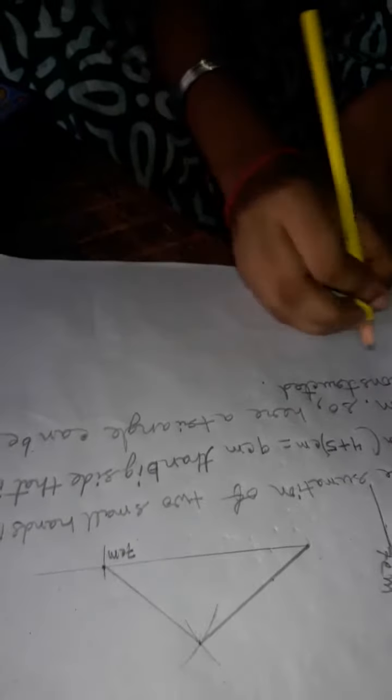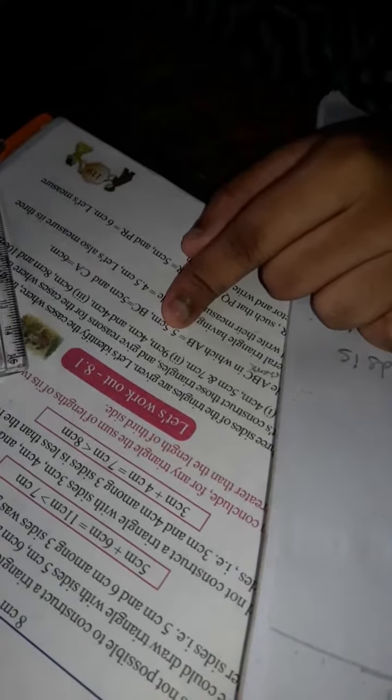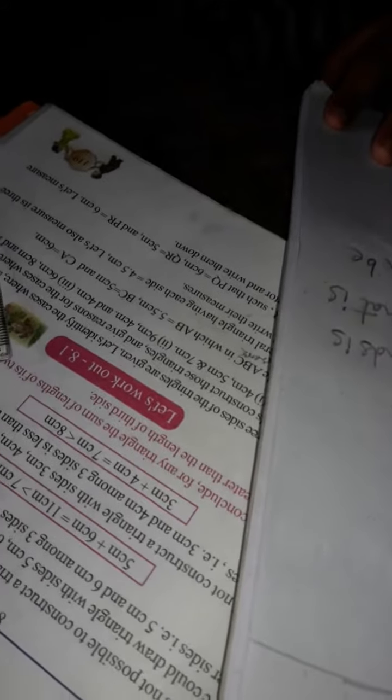Number 2. What is the question? 9 cm, 4 cm, 4 cm. Yes. Here, the bigger side is given 9 cm and the summation of two small sides, 4 cm, 4 cm, 4 plus 4 is equal to 8 cm. So, 8 is smaller than 9 cm. So, here a triangle cannot be constructed. Very good. This is the answer.